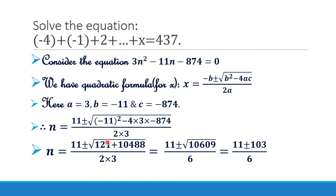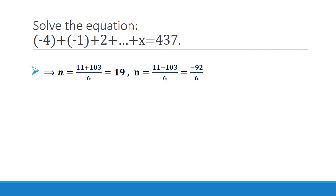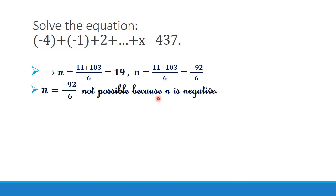This gives n equal to 11 plus 103 divided by 6, which is equal to 19 — wait, that equals 114 divided by 6, which is 19. And n equal to 11 minus 103 divided by 6 gives a negative value. Since n cannot be negative, n equal to minus 92 divided by 6 is not possible. Therefore, the required value of n equal to 19.